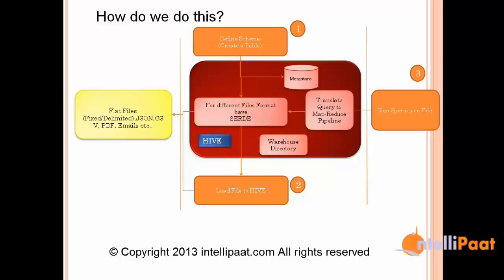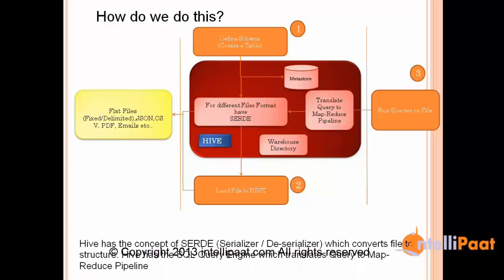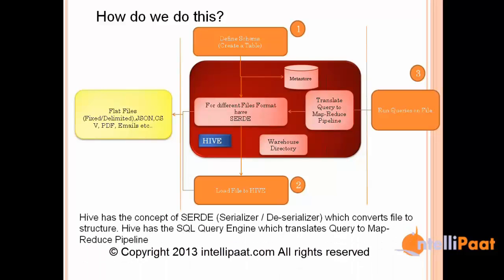Hive has four components: a Metastore, a set of SerDes (serializers and deserializers), and it enables a file to be made queryable using these constructs. It also has an internal structure called the warehouse directory where the file is really stored. We will come back to all three of these things as we go further, but first let's understand the concept.